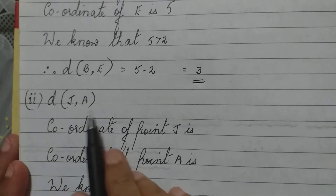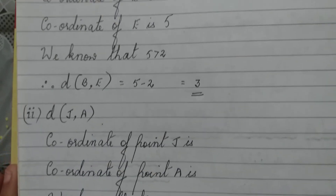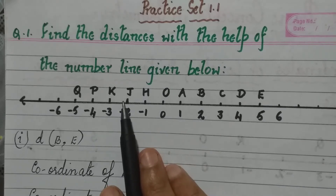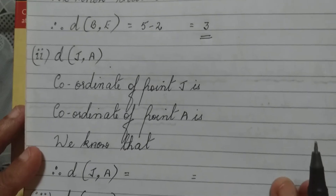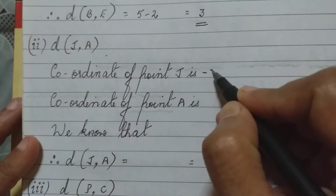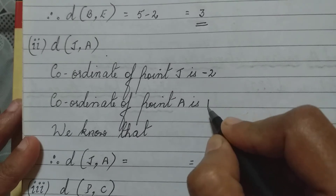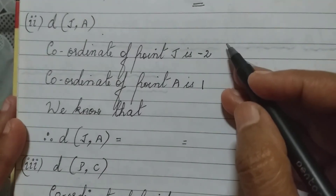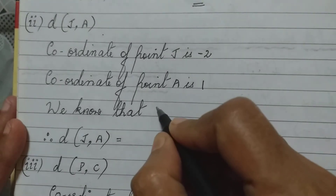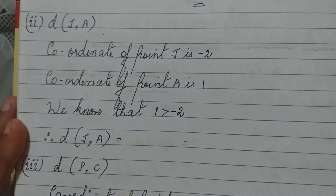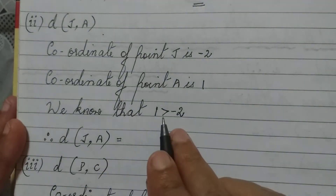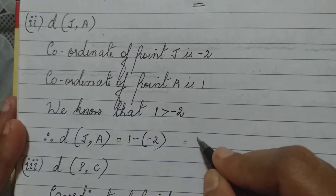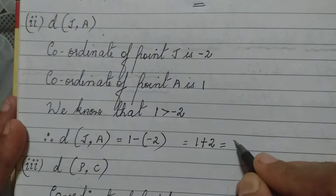Distance between points J and A. The coordinate of point J is minus 2, and the coordinate of point A is 1. We know that a positive number is always greater than a negative number, so 1 is greater than minus 2. Therefore, the distance between J and A is 1 minus (minus 2), which is 1 plus 2, equal to 3.